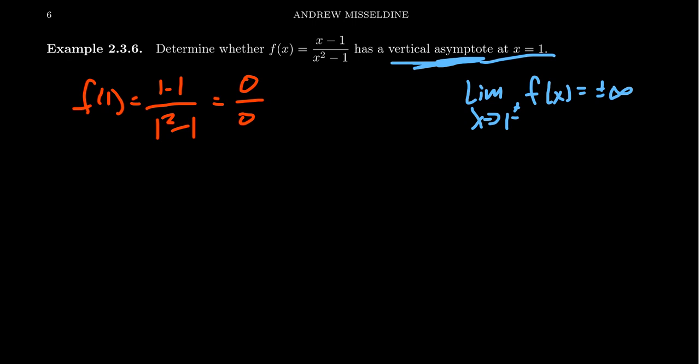When you see something like zero over zero, I want you to think of Princess Leia, because zero over zero is actually a form that carries hope — it turns out the limit could be something else. At the moment we don't know what it is, but this is what you call an indeterminate form. From this form, we cannot yet determine what the limit is — the limit might not exist, it could exist, it could be finite, it could be infinite. We have to investigate a little bit further.